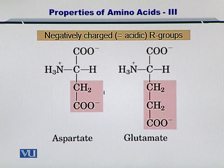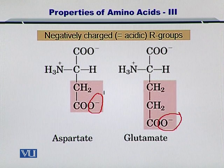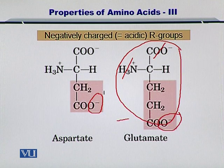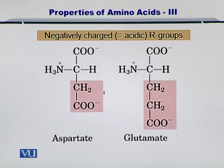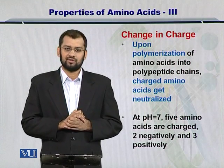The negatively charged amino acids are shown here, with the side groups also indicated. Each of the side groups has a negative charge, so the overall charge of the amino acid is negative since the positive and negative backbone charges cancel out. In this way, aspartate and glutamate act as negatively charged amino acids, and upon polymerization all of these charges are neutralized.